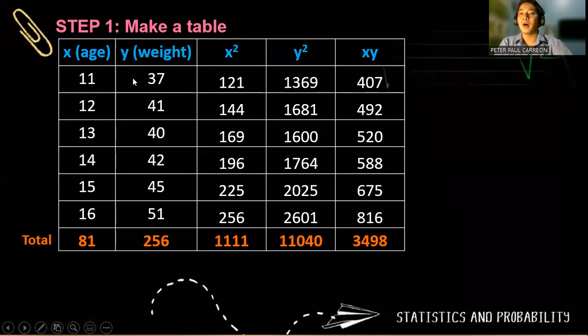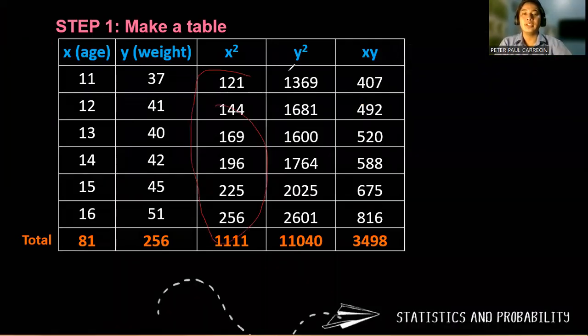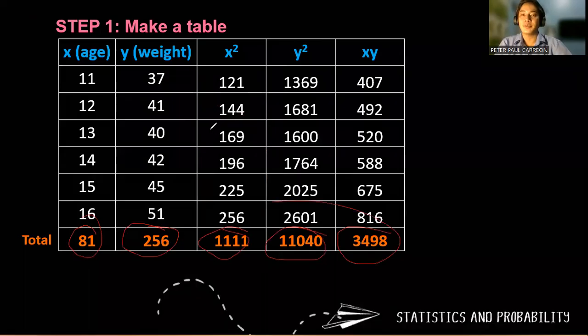So step number one is to make a table. So just like how we do it in correlation, you get on the third column x squared, and then you also get the summation of each. This will be the summation of x, the summation of y, the summation of x squared, the summation of y squared, and the summation of x times y.